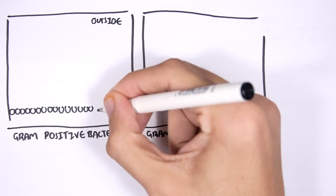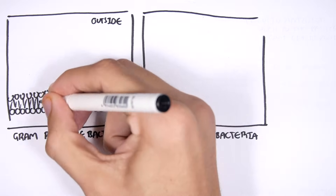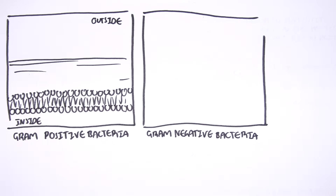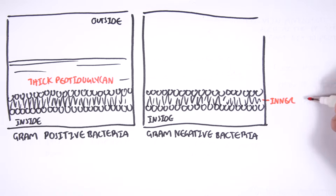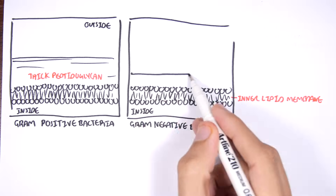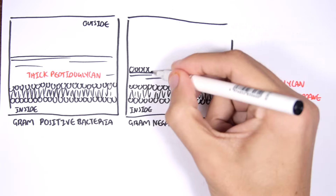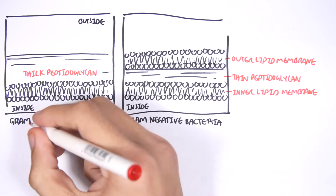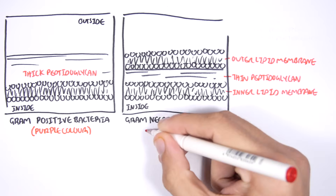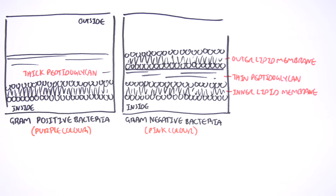If this was a gram-positive bacteria, it has an inner lipid membrane and a thick peptidoglycan layer. Peptidoglycan is basically carbohydrates and proteins, and the peptidoglycans constitute the bacterial cell wall. The gram-negative bacteria, on the other hand, has an inner lipid membrane, but instead has a thin peptidoglycan layer and then another outer lipid membrane — so it has two lipid membranes. These layers are what give gram-positive its purple color upon gram staining and gram-negative bacteria its pink color upon gram staining.